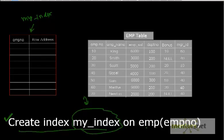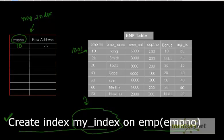When you run CREATE INDEX my_index ON emp (employee_number), Oracle creates an additional storage area named my_index. It stores the employee number along with the row address. For example, employee number 10 is stored with row address 1001, employee number 20 with address 1035, employee number 30 with address 1046, and so on.